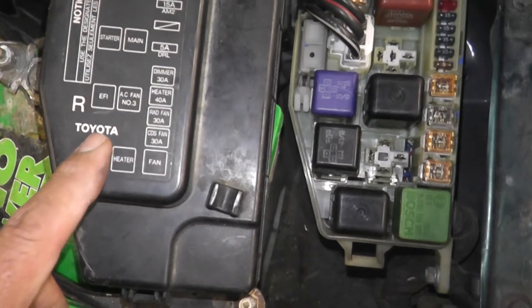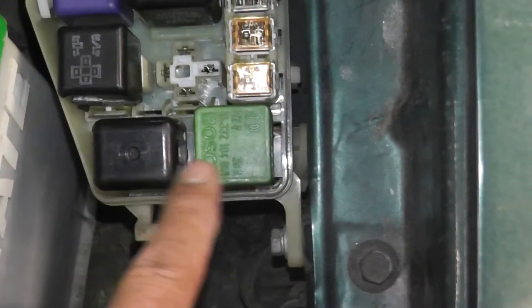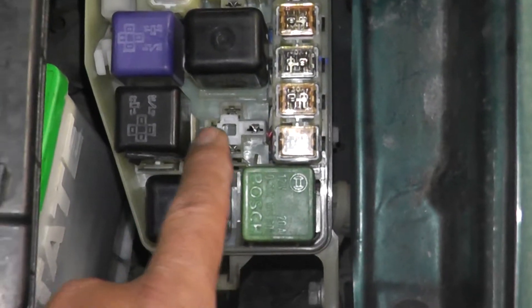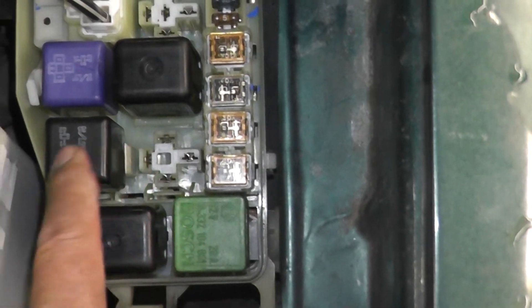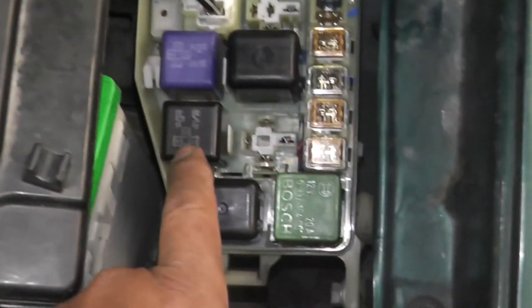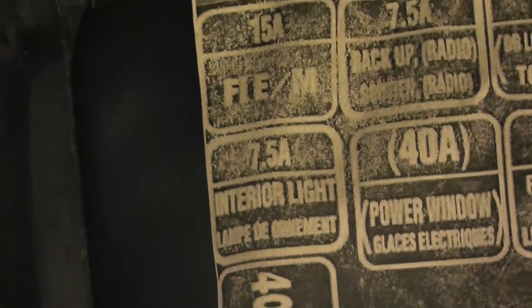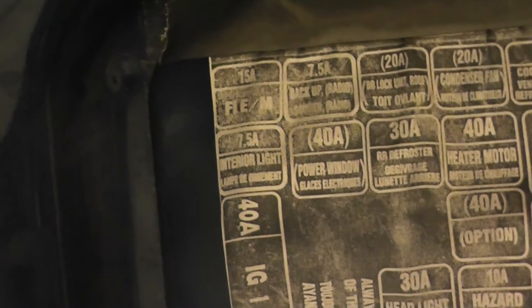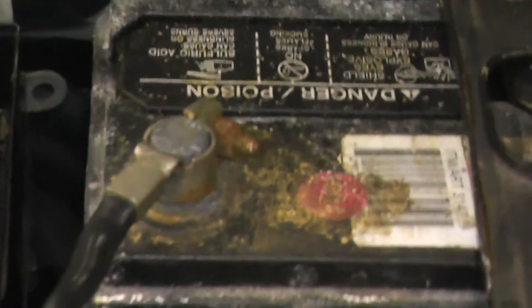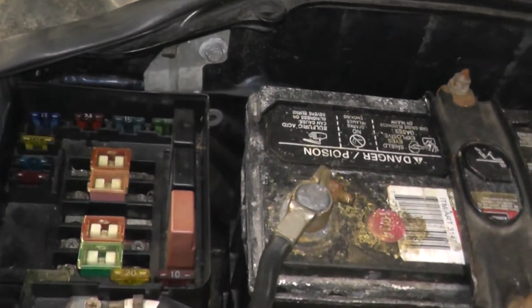So in this case, we have EFI relay right here. The bottom two are heater and fan. The relay that's missing here is AC clutch. This is your EFI relay. Sometimes it might just read FI, so that's for fuel injection. In this case, this is a Honda, not that it matters. You're just looking for a fuel injection or a fuel pump relay.